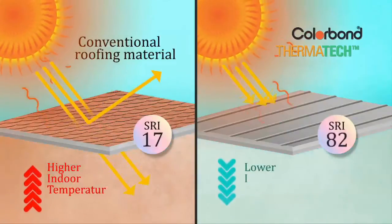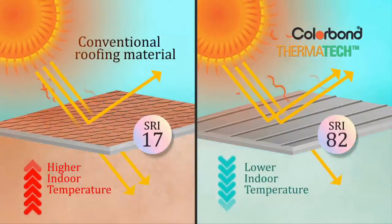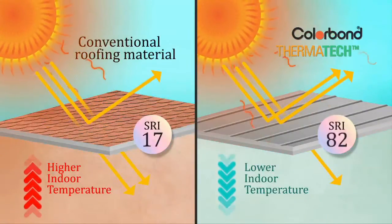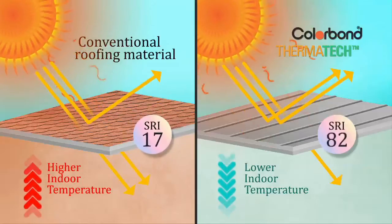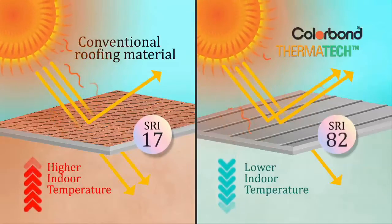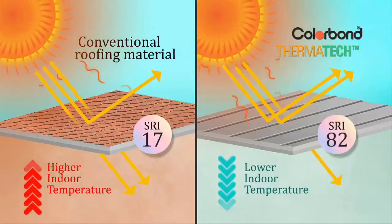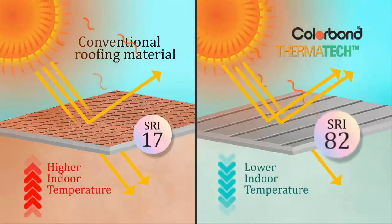Conventional roofing material has an average SRI value of 17. Colorbond steel with Thermatec technology has an average of more than three times higher SRI values.